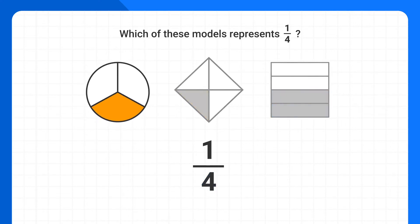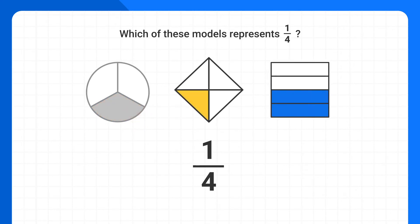This circle only has 1, 2, 3 pieces, so it can't be the correct model. However, both of the other models have 4 total pieces.